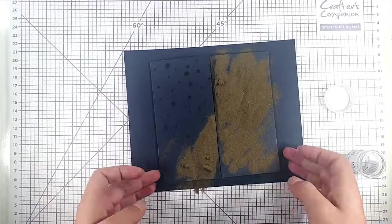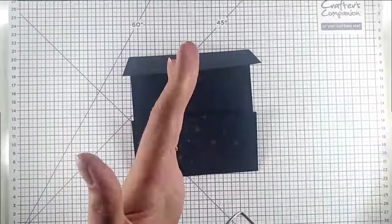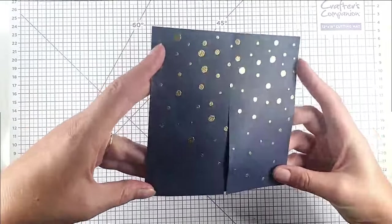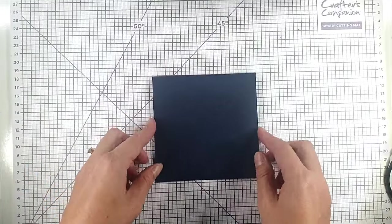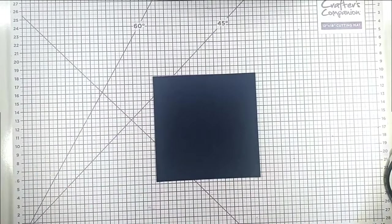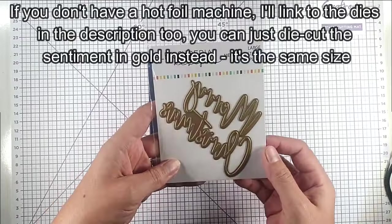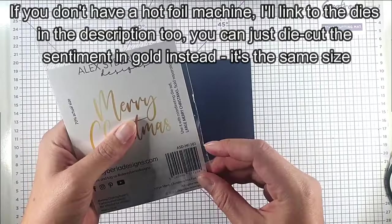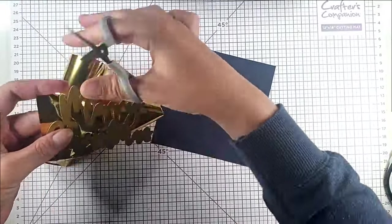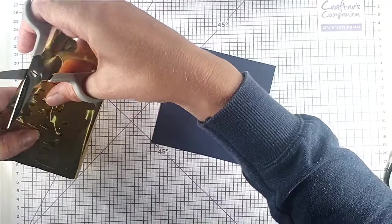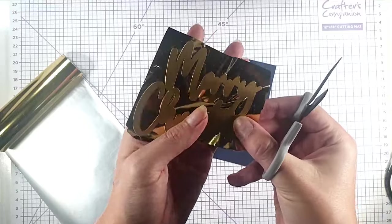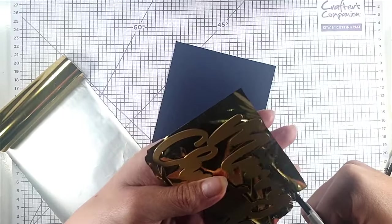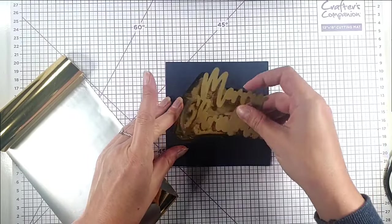We're going to move on to the bauble which is going to be detachable and also the main focus of our card. I'm going to use this large Merry Christmas hot foil plate and hot foil it in gold onto this navy. I'm going to cut a piece of gold foil to fit my Merry Christmas and you want to trim it around the hot foil plate a bit so that you don't get any over foiling, and then I'm going to secure it onto my cardstock.